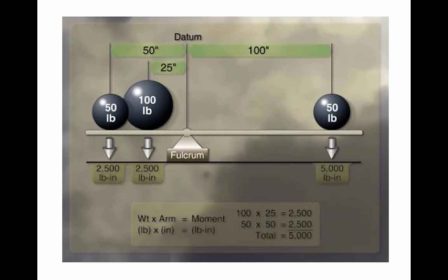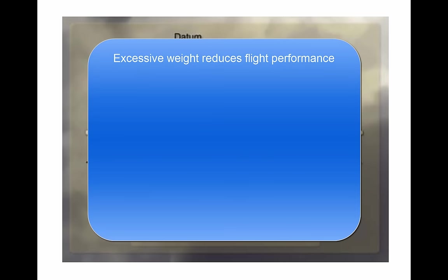If the weight is greater than the lift generated, the aircraft may be incapable of flight. Any item aboard the aircraft that increases the total weight is undesirable for performance. Manufacturers attempt to make an aircraft as light as possible without sacrificing strength or safety. The pilot should always be aware of the consequences of overloading. An overloaded aircraft may not be able to leave the ground, or if it does become airborne, it may exhibit unexpected and unusually poor flight characteristics. The initial indication of poor performance usually takes place during takeoff. Excessive weight reduces the flight performance in almost every respect.